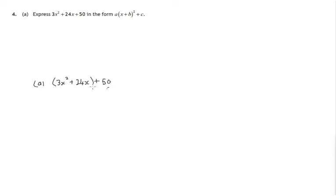We'll just look at the first two terms of this expression and we can note that there's a common factor of 3, let's take that outside the brackets. We get x² plus 8x and there's the 50 tagged on which we'll deal with later.